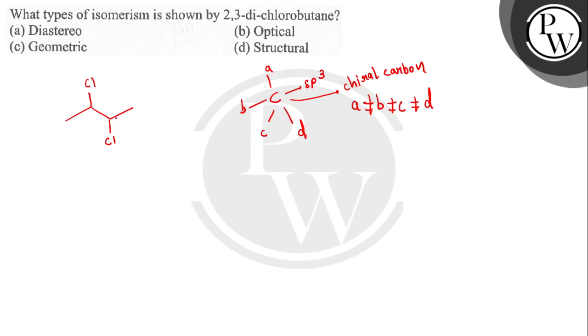So basically you can see, this is the structure of 2,3-dichlorobutane. If we look at this structure, then here at this carbon we have hydrogen, chlorine, methyl, and one other unit.